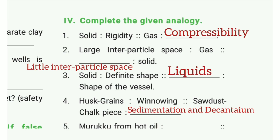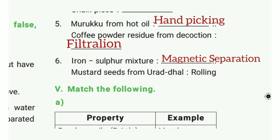Fourth one: husk and grains — winnowing. Fifth one: short dust, chalk piece — sedimentation and decantation. Sixth one: muruku from hot oil — hand picking; coffee powder received from decantation — the answer is filtration. Then: iron-sulfur mixture — magnet separation; mustard seeds from wood — winnowing.